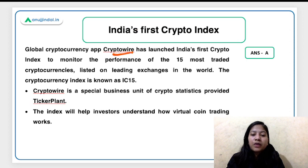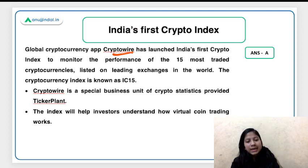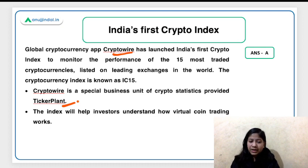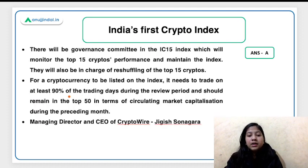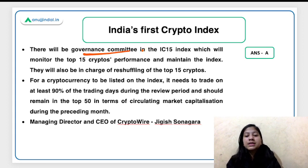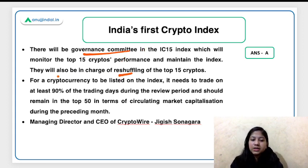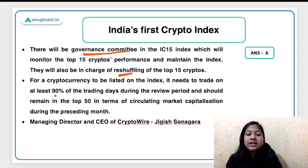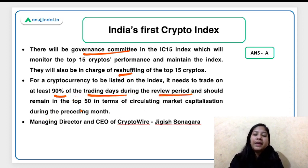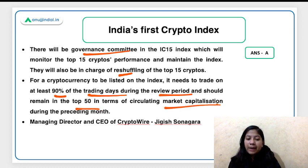CryptoWire is the organization that has released this crypto index in India. It is basically a special business unit of Crypto Statistics Ticker Plant. A governance committee will monitor the performance of cryptocurrencies, maintain the index, and do the reshuffling. For a cryptocurrency to be listed, it needs to be traded on at least 90% of trading days during the review period and remain in the top 50 in terms of circulating market capitalization during the preceding month.